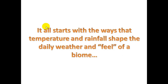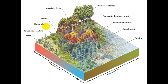It all starts with the ways that temperature and rainfall shape the daily weather and feel of a biome. Here's a diagram with two axes: temperature and precipitation. A hot and wet area would be the tropical rain forest. Cold and dry is what you have at the poles — that's the tundra area. Hot and dry gives us desert. Cold and wet we don't really find on our planet. In the middle — not too hot, not too cold, not too wet, not too dry — we have the temperate deciduous forest.